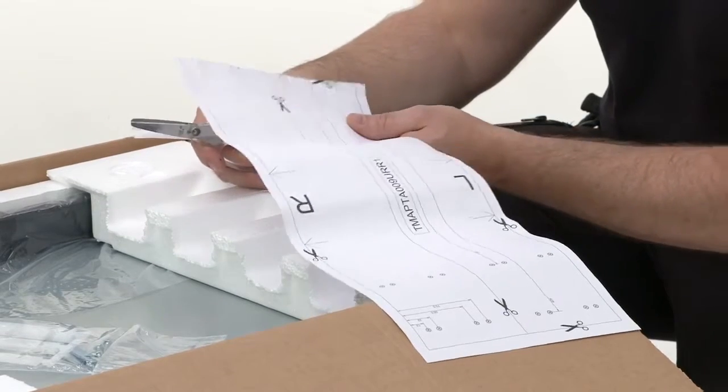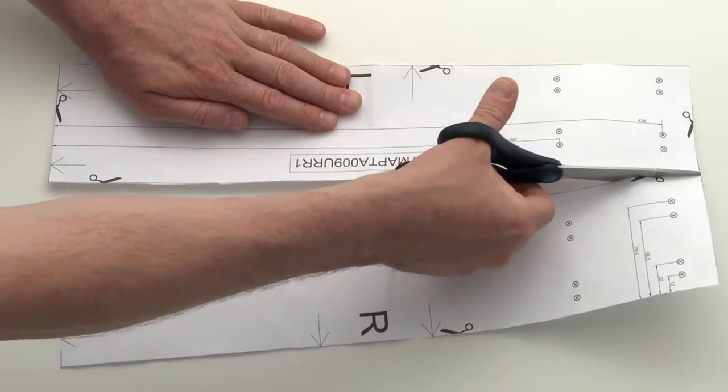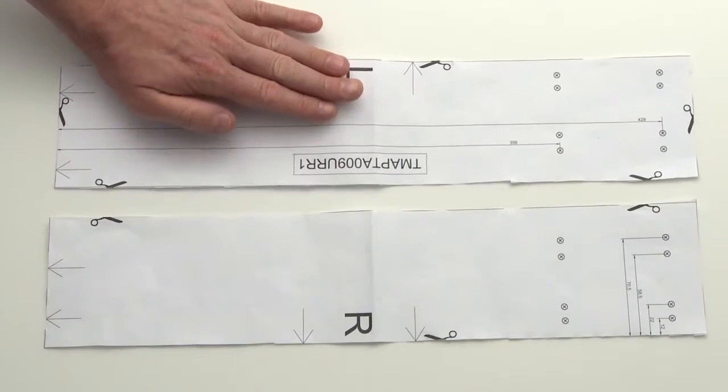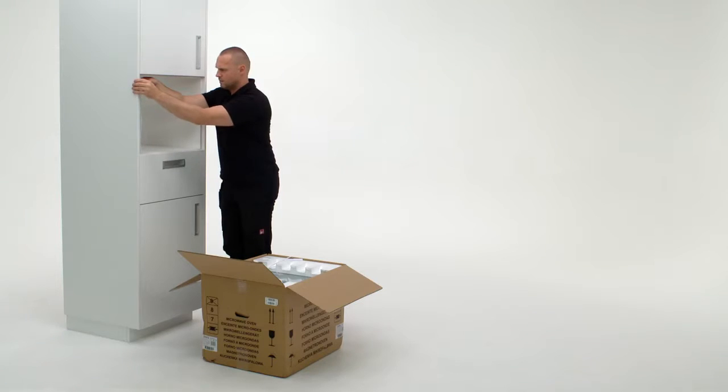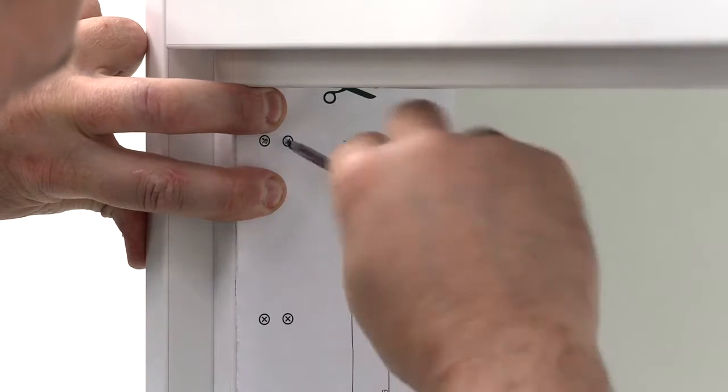Take the drilling template to one side and cut off the edges as required. Place the drilling template inside the niche on the appropriate side and using a point, mark out the screwing points.